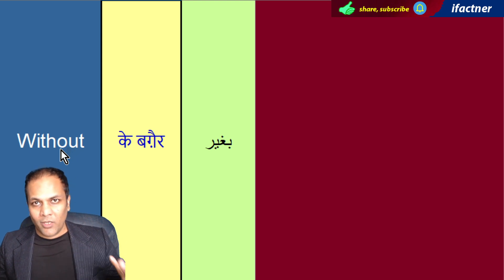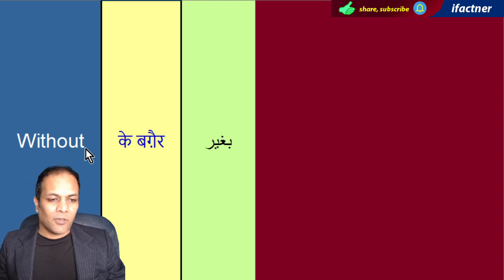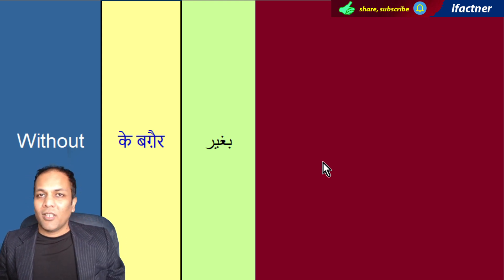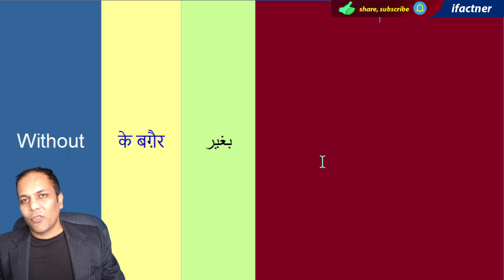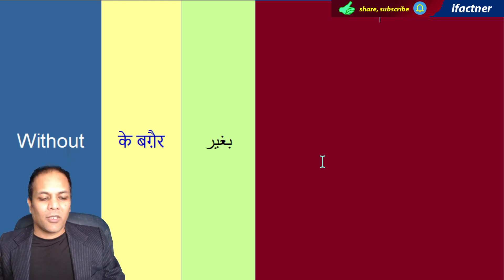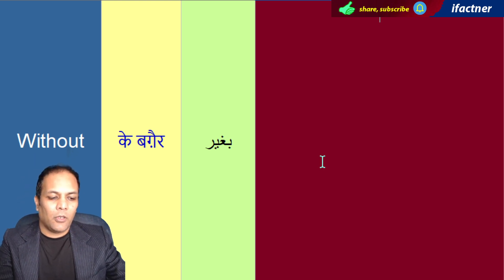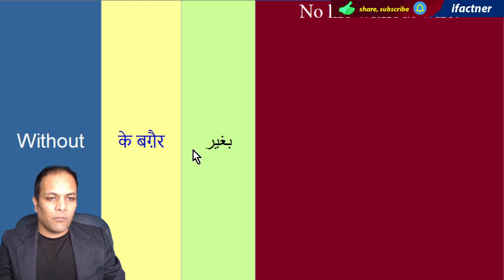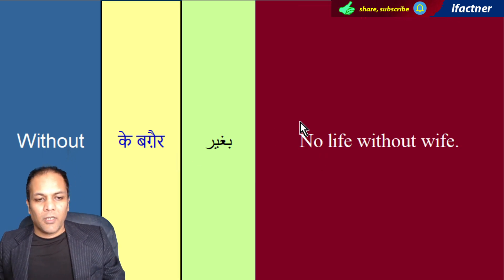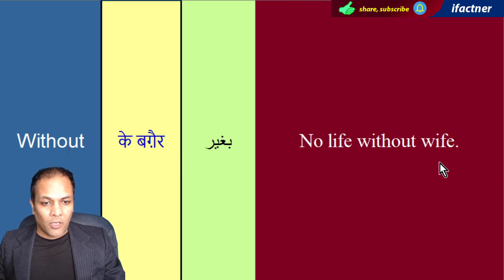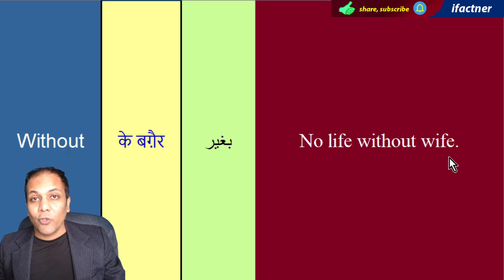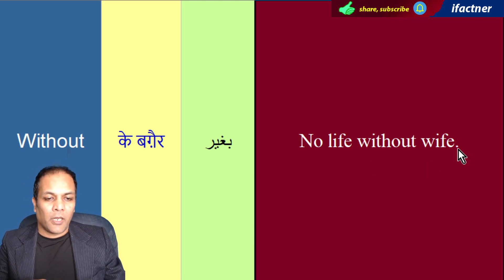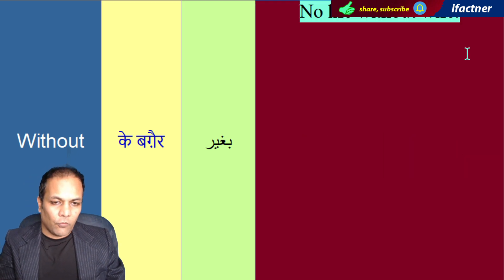I'm doing it without your help. 'Without' ko use kerte huay English mein kuch sentences banaate hain aur dekhte hain ke hum 'without' ko kaisa kaisa use kerte hain. Jaise kaha jata hai: 'No life without wife' — biwi ke bagair koi zindagi nahin. No life without wife.